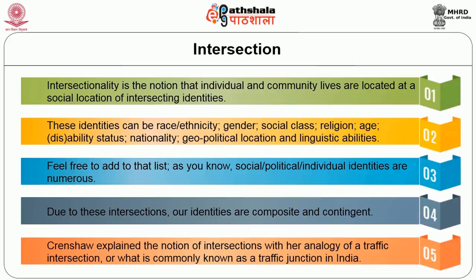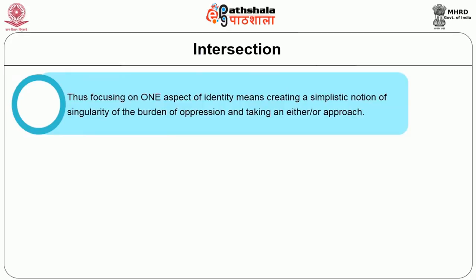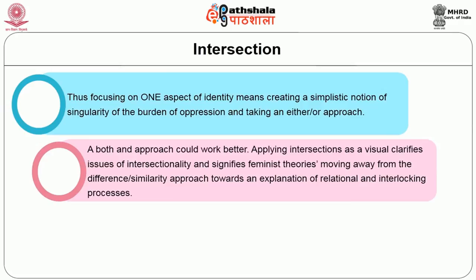Crenshaw explained the notion of intersections with her analogy of a traffic intersection — commonly known as a traffic junction in India. Focusing on one aspect of identity means creating a simplistic notion of singularity of the burden of oppression and taking an either-or approach. A 'both' approach could work better. Applying the intersection as a visual clarifies issues of intersectionality and signifies feminist theories moving away from the difference-similarity approach towards an explanation of relational and interlocking processes.